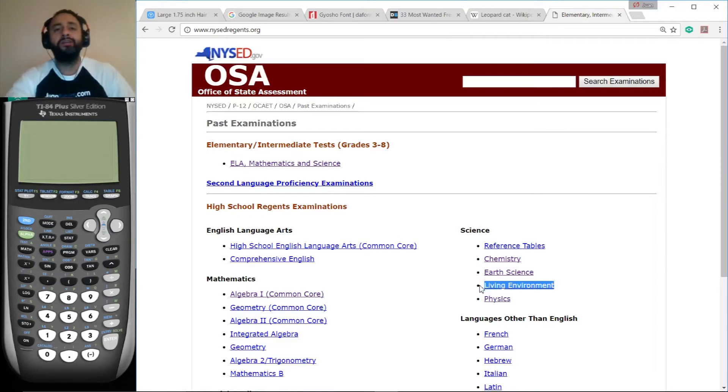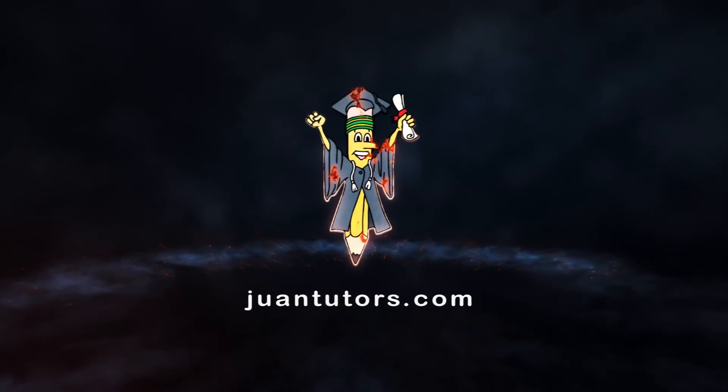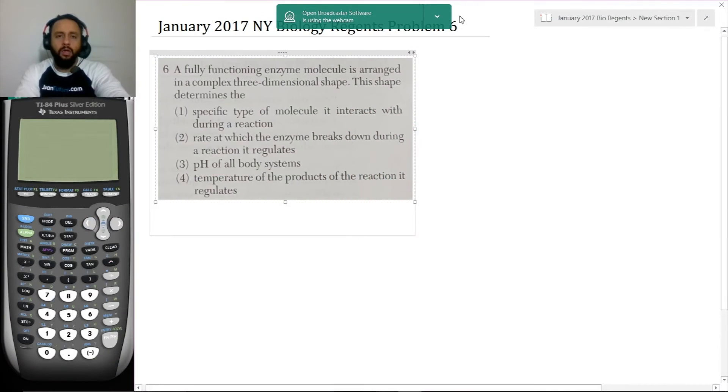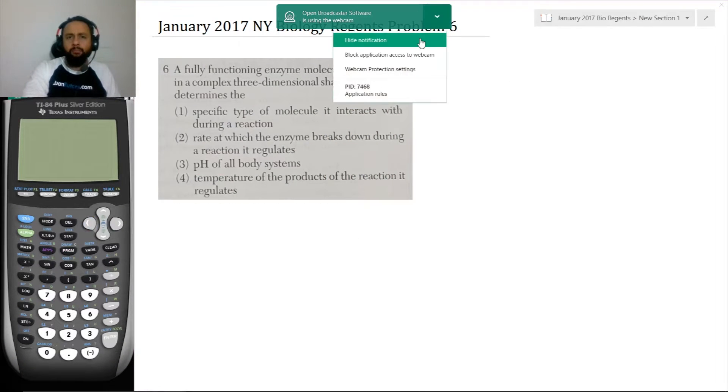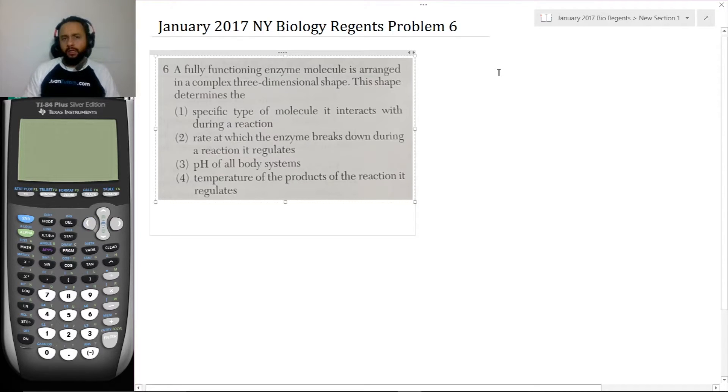Alright, let's get to work. Here's problem six. A fully functioning enzyme molecule is arranged in a complex three-dimensional shape. This shape determines the specific type of molecule it interacts with during the reaction, the rate at which the enzyme breaks down during a reaction it regulates, the pH of all body systems, or the temperature of the products of the reaction it regulates.